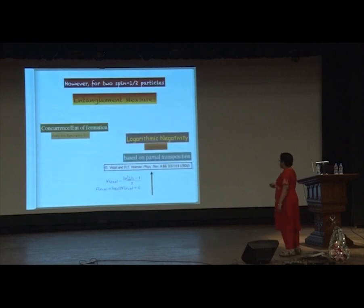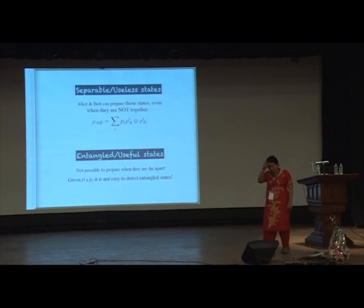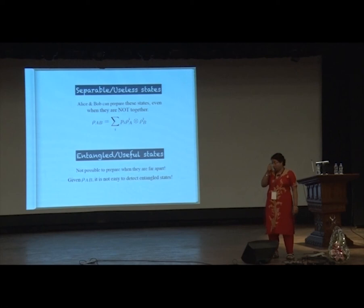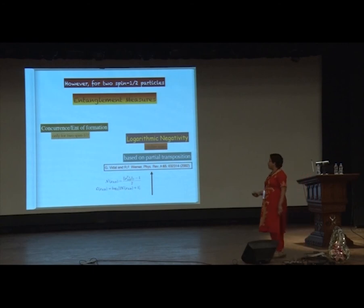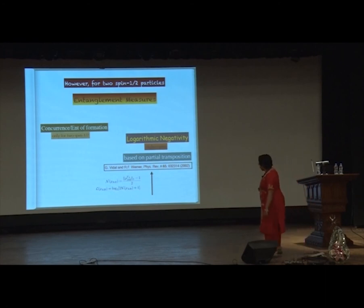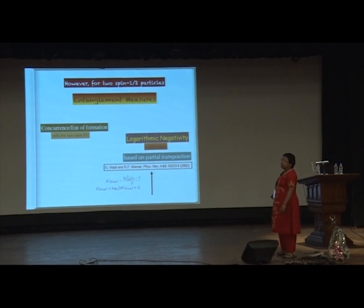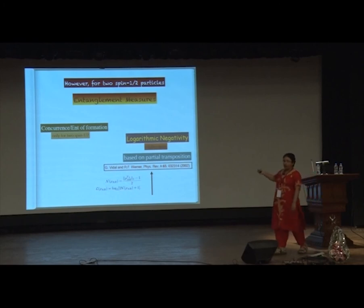Although the definition looks simple, after 20 years there is still no efficient detection method for arbitrary states. However, for two spin-half particles the situation is better: there are computable entanglement measures such as concurrence and logarithmic negativity. Logarithmic negativity can also be computed for higher spins. In this whole talk, all results will be presented using logarithmic negativity.